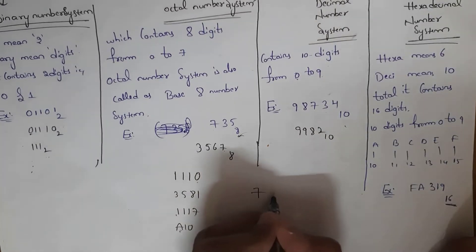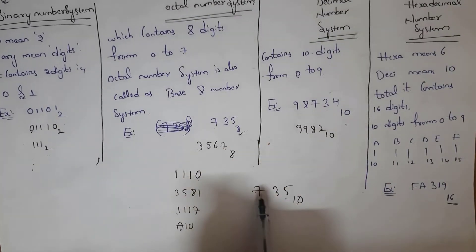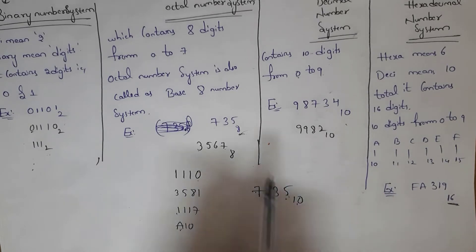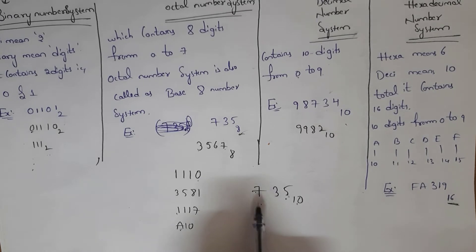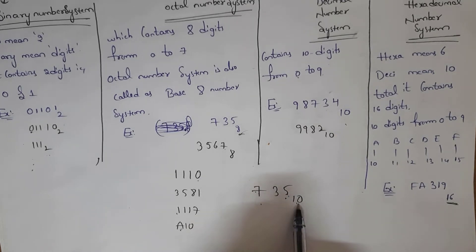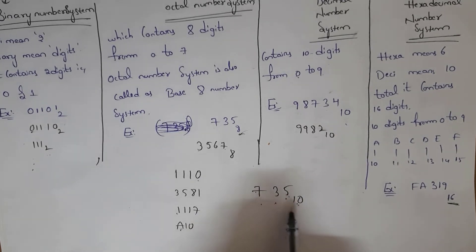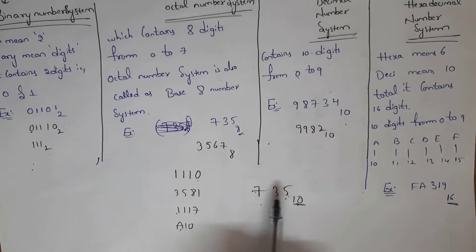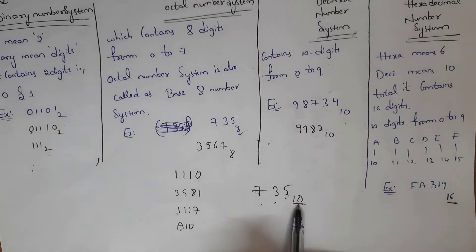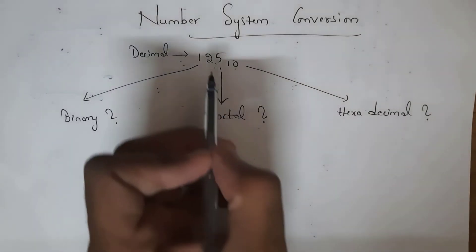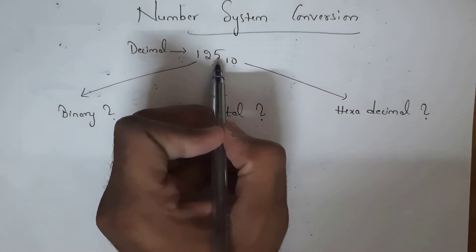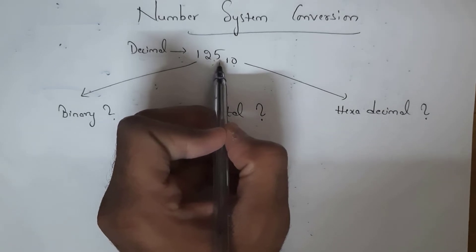For example, if given 735 base 10 — the digits are between 0 and 7, so it could look like octal, but because the question specifies base 10 you must treat it as a decimal number system. If they give base 10, you need to consider it as base 10, regardless of the digits. For example, 125 base 10 is a decimal number.